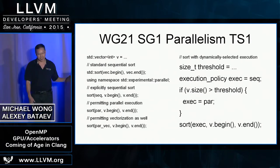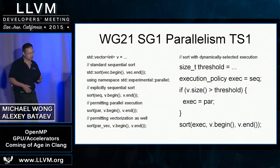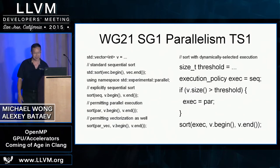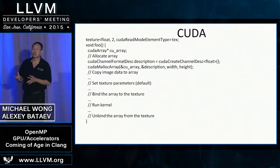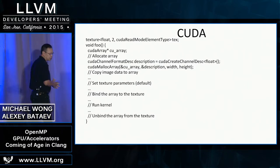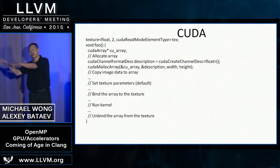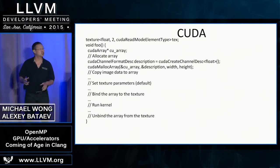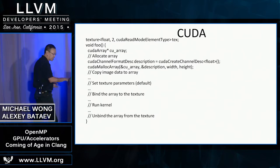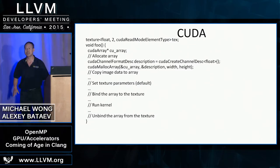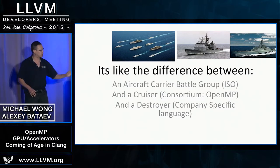The C++ Parallelism TS gives you a way to annotate STL algorithms with sequential, parallel, or parallel-vectorized execution policies. Fundamentally, GPU programming hasn't changed much since CUDA established the pattern: copy data to a device array, run a kernel, and unload results on the other side. Some designs hide the data movement; some don't. That's really all it is.